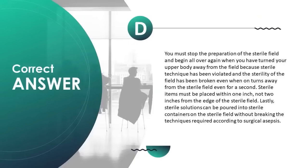You must stop and begin all over again when you have turned your upper body away from the field, because sterile technique has been violated even for a second. Sterile items must be placed within 1 inch — not 2 inches — from the edge of the sterile field. Sterile solutions can be poured into sterile containers on the sterile field without breaking surgical asepsis.